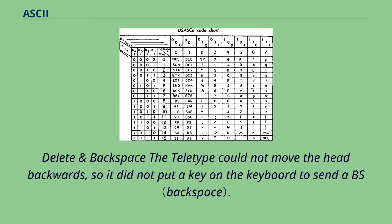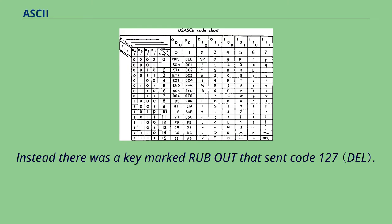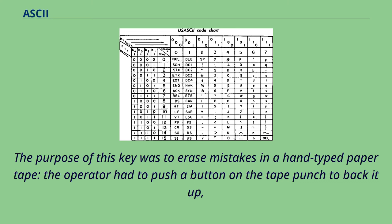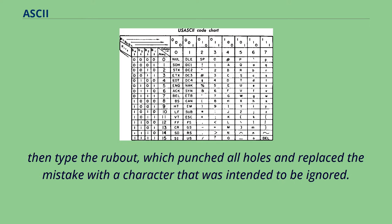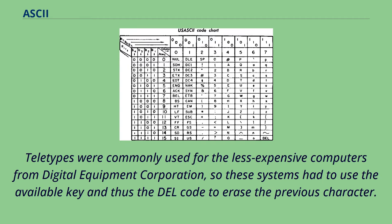Delete and backspace: the Teletype could not move the head backwards, so it did not put a key on the keyboard to send a BS. Instead there was a key marked rub-out that sent code 127. The purpose of this key was to erase mistakes in a hand-typed paper tape; the operator had to push a button on the tape punch to back it up, then type the rub-out, which punched all holes and replaced the mistake with a character that was intended to be ignored. Teletypes were commonly used for the less expensive computers from Digital Equipment Corporation, so these systems had to use the available key and thus the DEL code to erase the previous character.